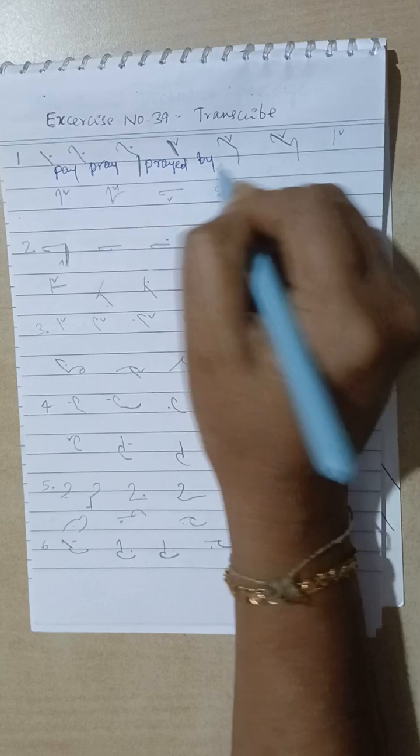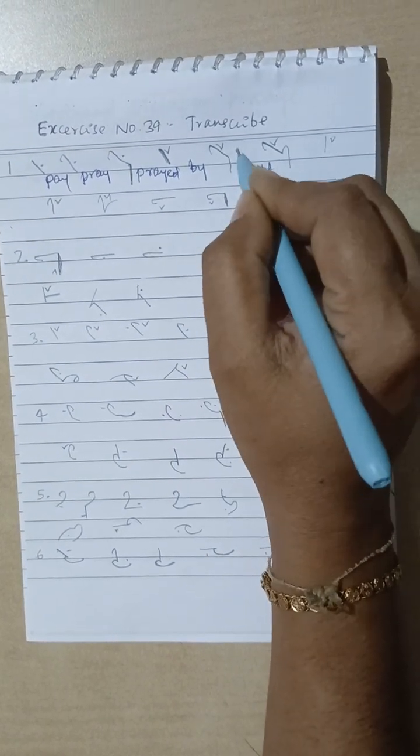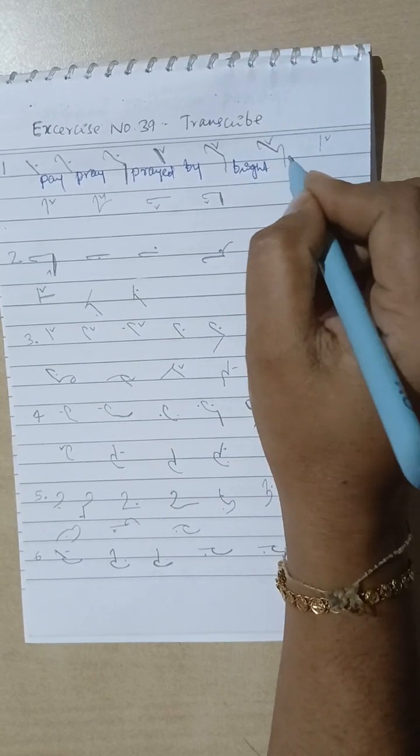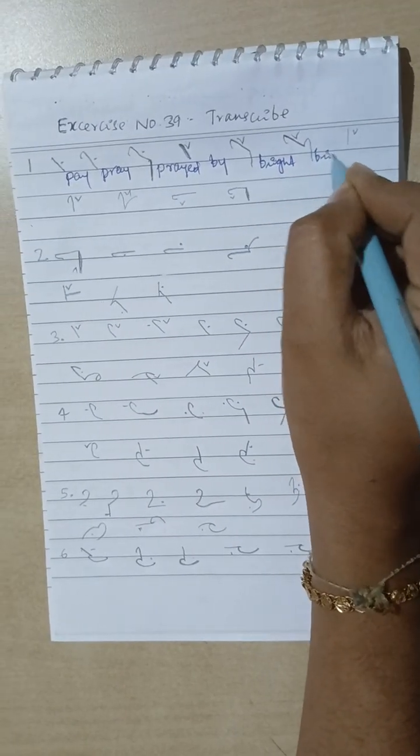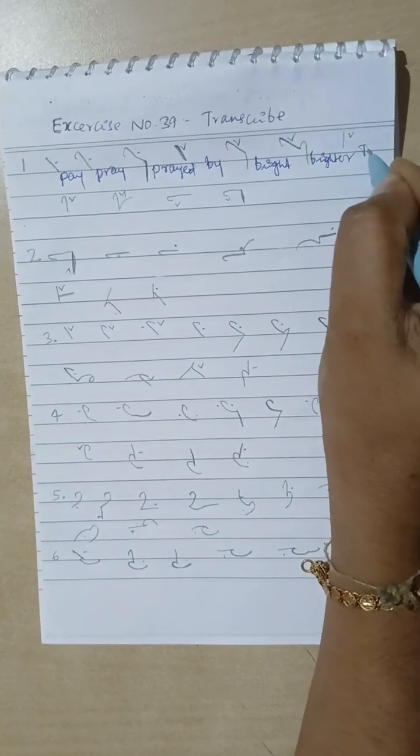By. Then Bright. Bur, I diphthong, T, Brighter. Bur, I diphthong, Ter. Then T, I diphthong, Tai.